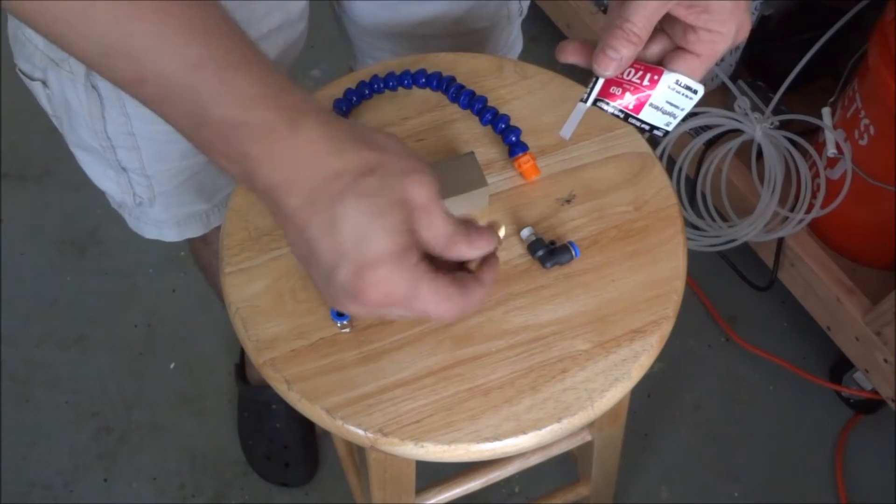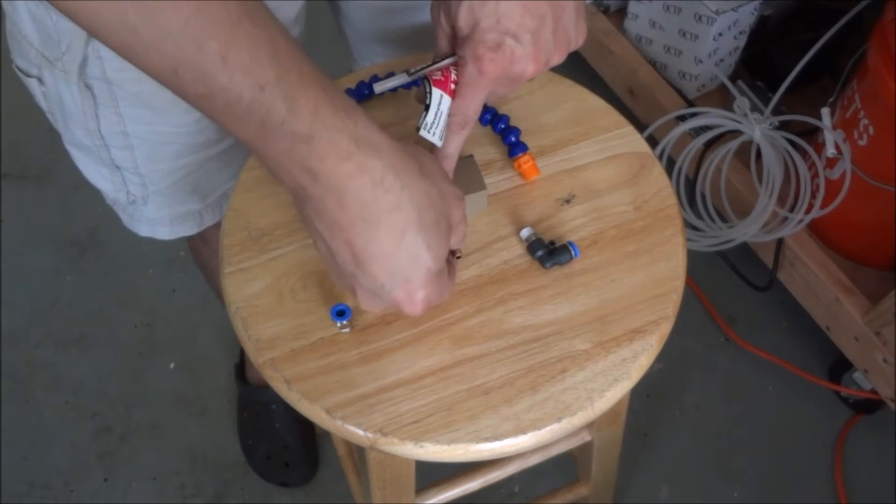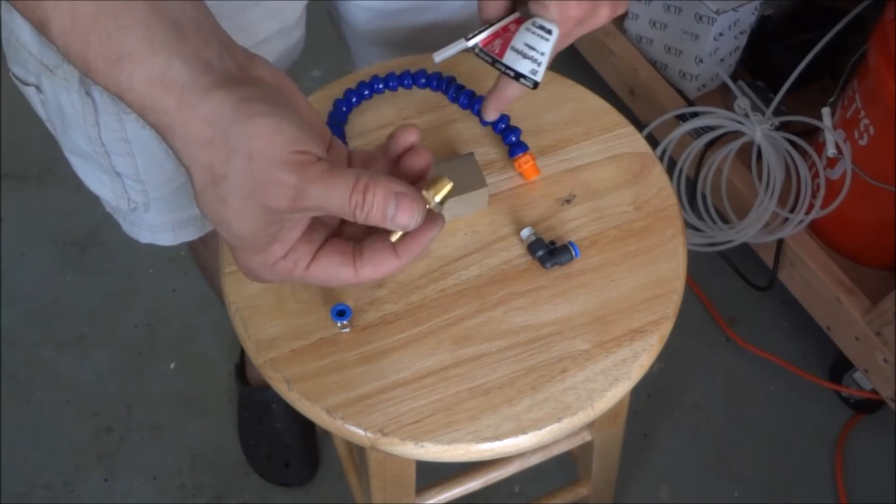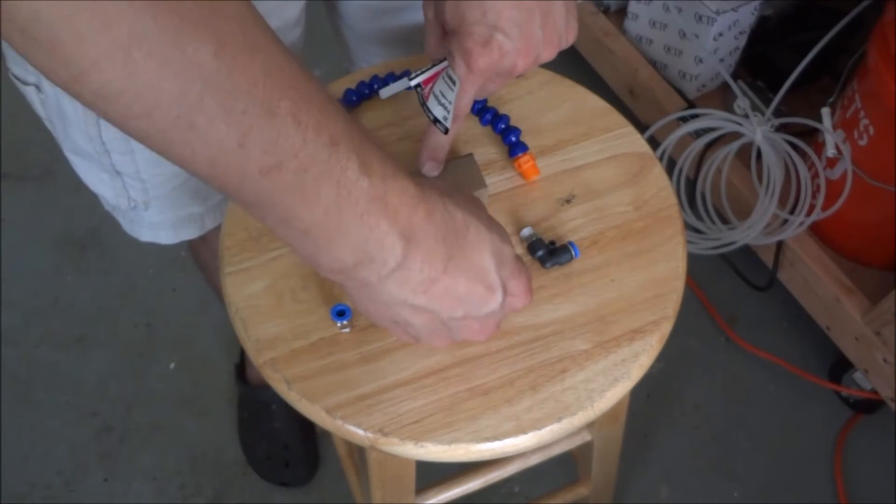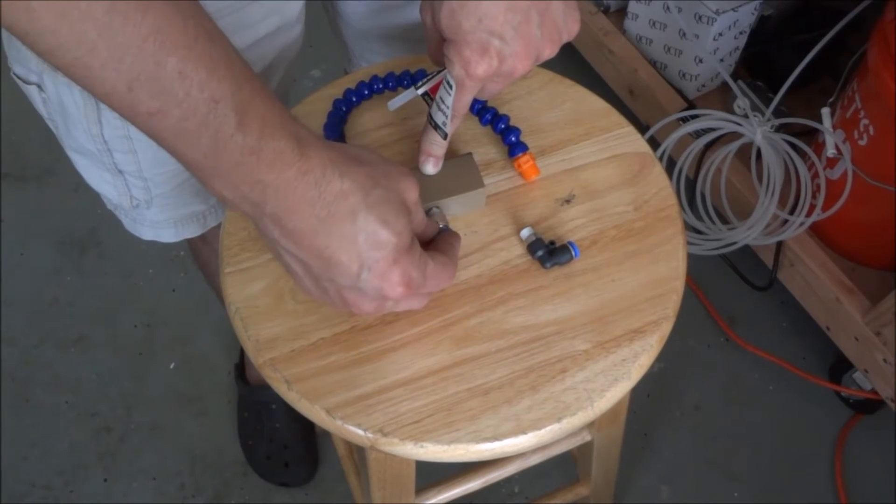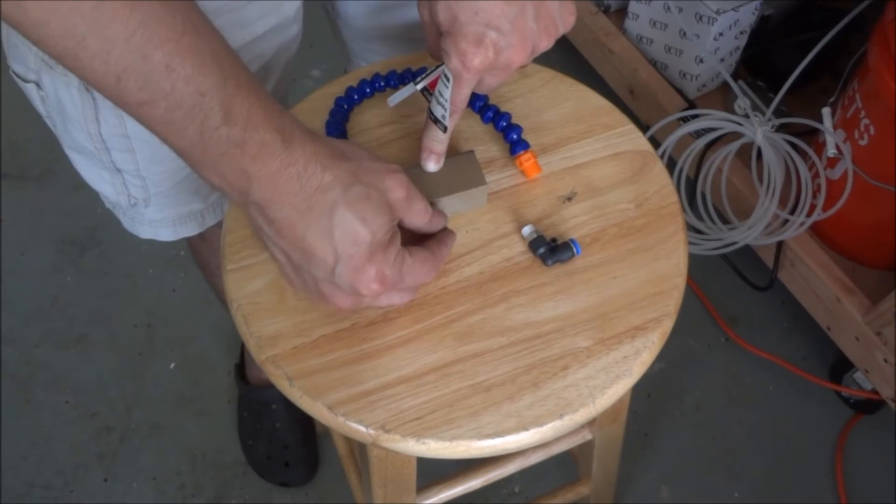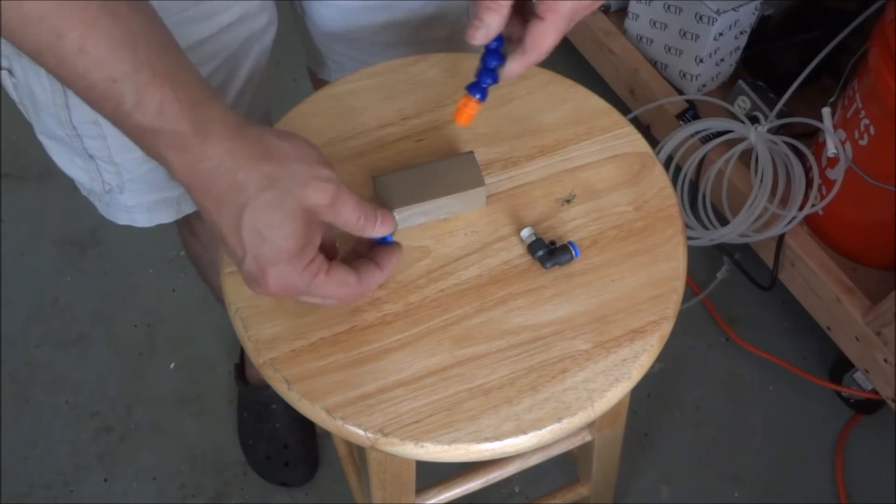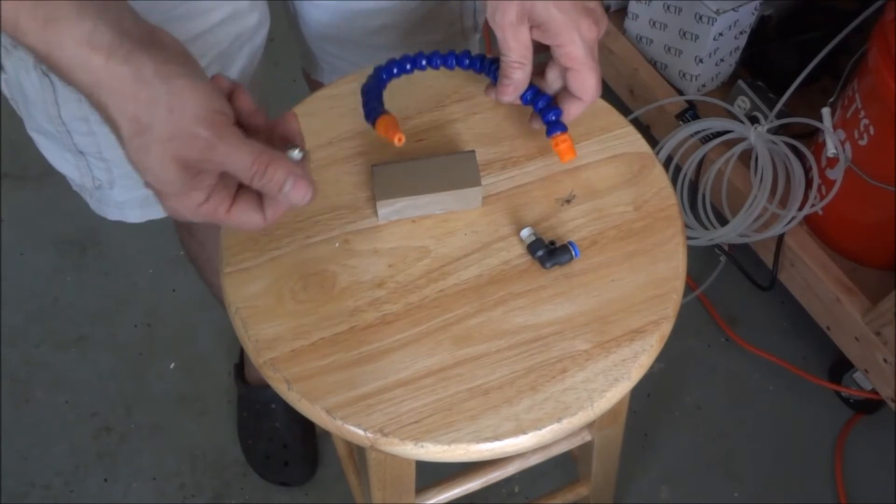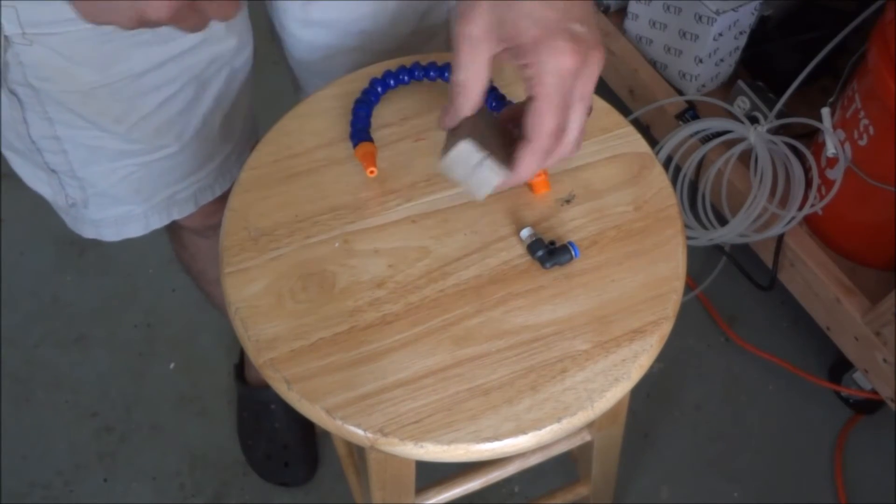You could use one of these barbed fittings and just slide it into your hose, or you can make your own fitting. But I have some of these that I use for my power drawbar, so I'm just going to put that in there like that. I'm just going to drill a couple holes and get this made up.